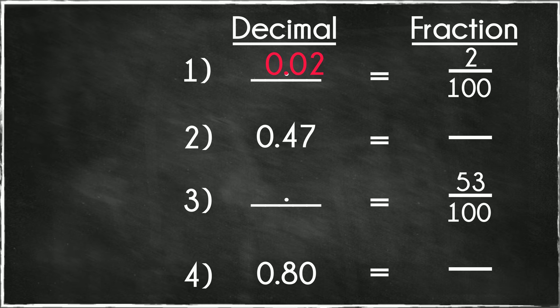Number 2. 0.47. There are 4 tenths and 7 hundredths. As a fraction, it is 47 hundredths.